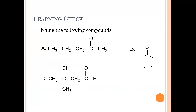Now naming A, B, and C. A is a ketone: counting one, two, three, four, five carbons — pentanone — occurring at carbon two, so this is 2-pentanone. B is a cyclohexane ring: cyclohexanone, occurring at carbon one. C is an aldehyde with chain length four: we've done this one several times — it's 3,3-dimethylbutanal.